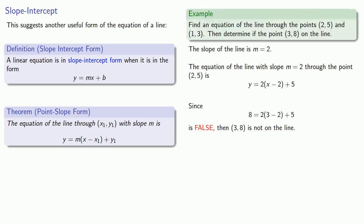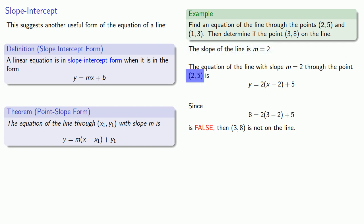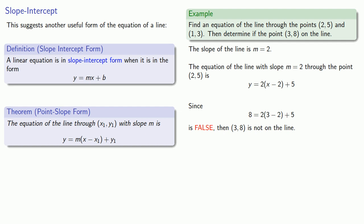For example, as soon as we found that the slope of the line between (2, 5) and (1, 3) was 2, we could use the point (2, 5) to write down the equation of the line immediately. This means you never want to write the equation of the line in slope-intercept form first. Slope-intercept form is only something you do after you already have the equation of the line.